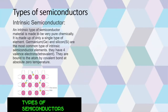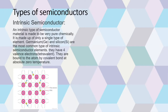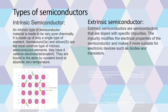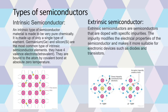Types of semiconductors: An intrinsic semiconductor is made to be very pure chemically, made up of only a single type of element. Germanium (Ge) and silicon (Si) are the most common intrinsic semiconductor elements. They have four valence electrons (tetravalent) and are bound to the atom by covalent bonds at absolute zero temperature. Extrinsic semiconductors are semiconductors doped with specific impurities. The impurity modifies the electrical properties of the semiconductor, making it more suitable for electronic devices such as diodes and transistors.